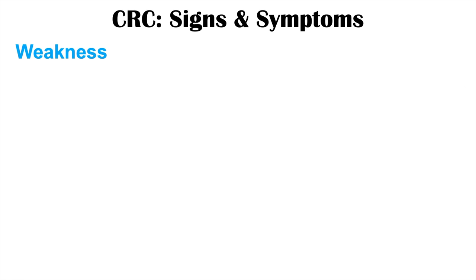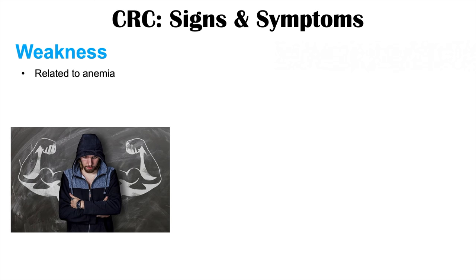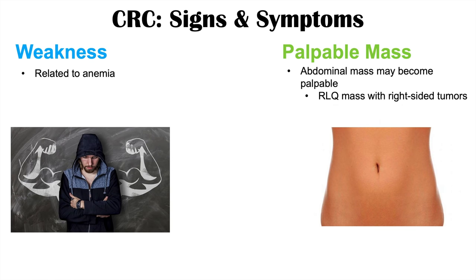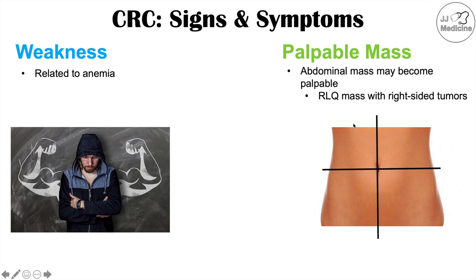Patients with colon cancer can also experience weakness, which may be related to anemia. A palpable mass may also be found in some patients. An abdominal mass may become palpable, especially with right lower quadrant masses. The abdomen is split into four quadrants using the umbilicus as the midpoint: right upper quadrant, left upper quadrant, right lower quadrant, and left lower quadrant. If there's a tumor in the right colon in the right lower quadrant, it may be palpable.